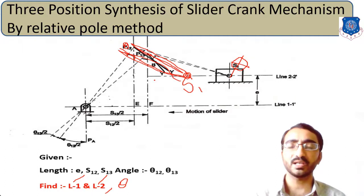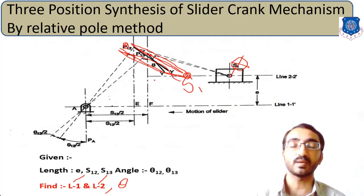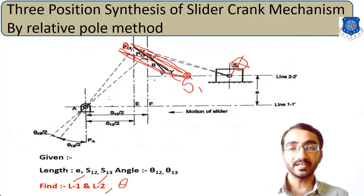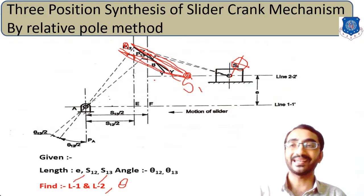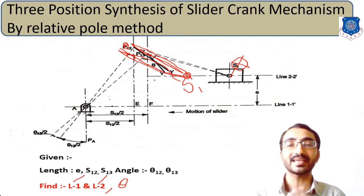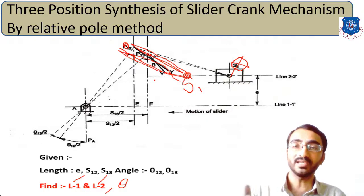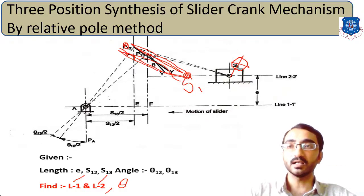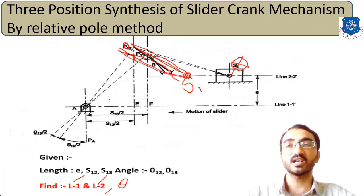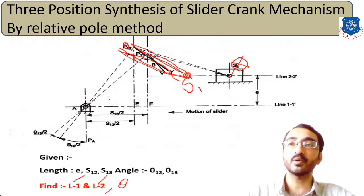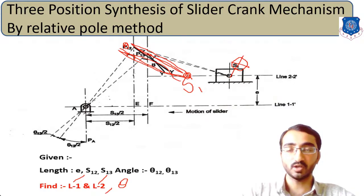To summarize, synthesis problems can be solved by two methods: the inversion method and the relative pole method. The relative pole method is further divided into two-position synthesis and three-position synthesis. In this video we used three-position synthesis. A separate video covering two-position synthesis is also available. Thank you.